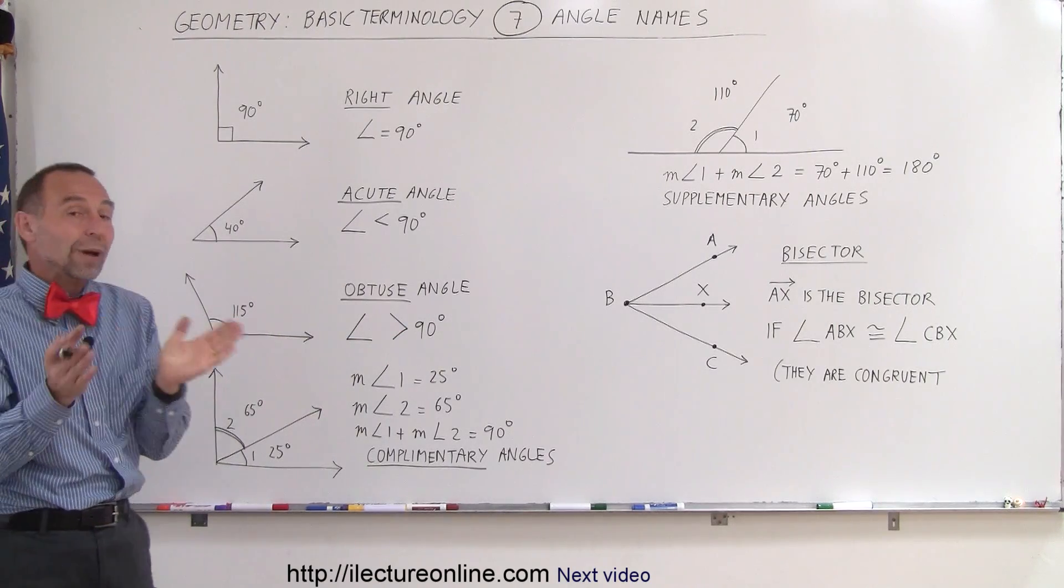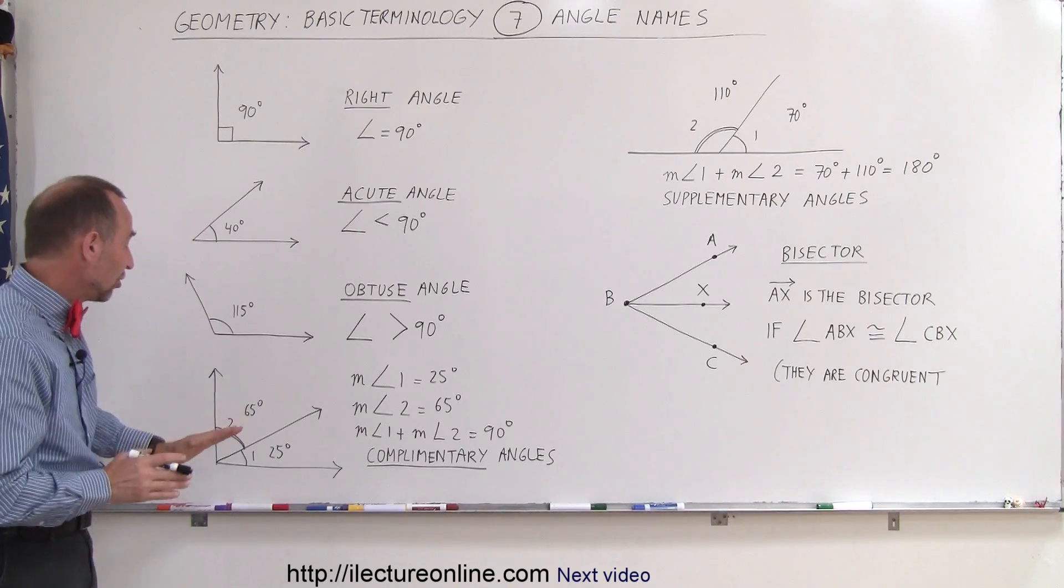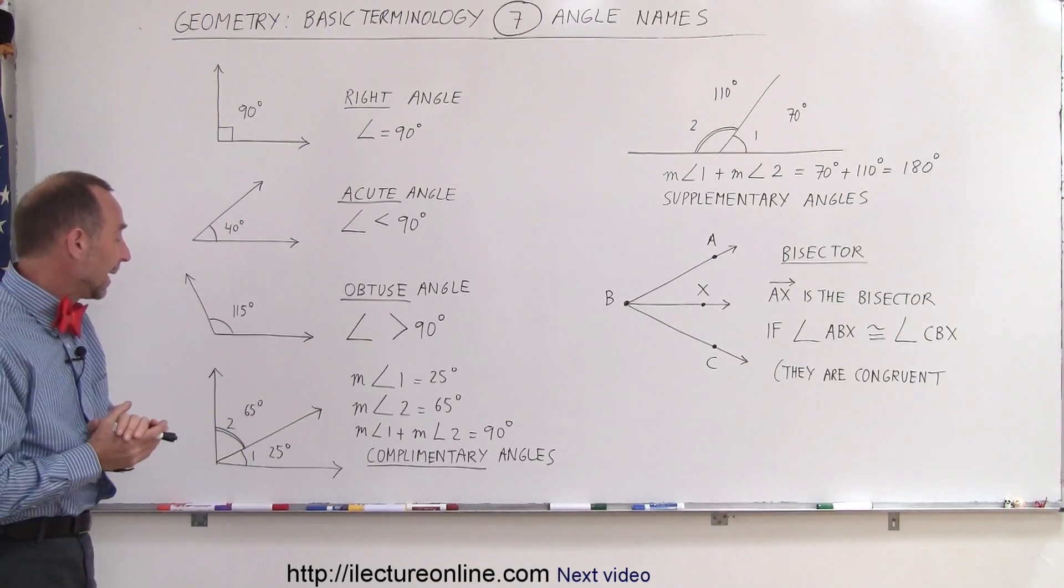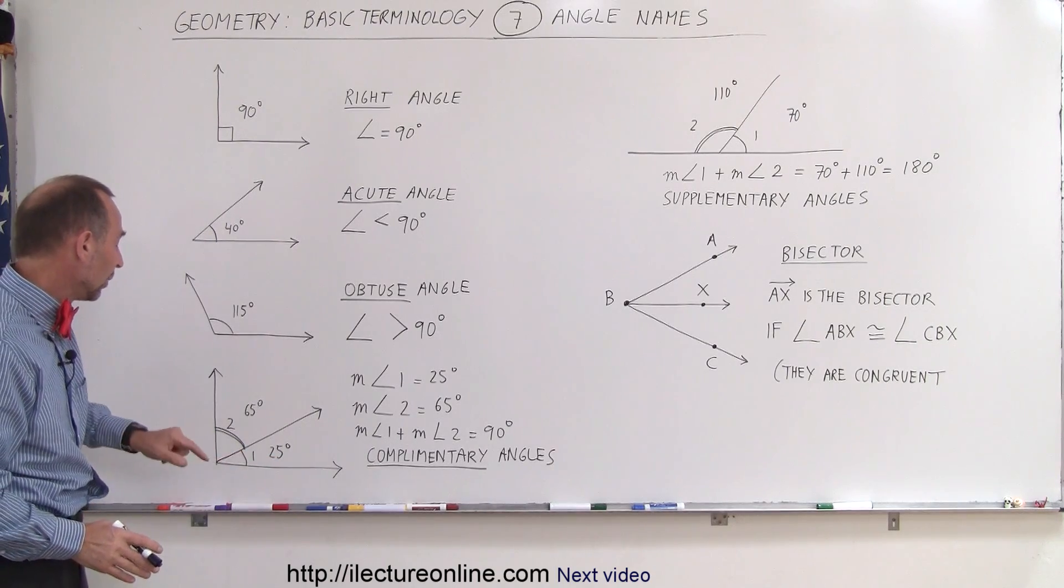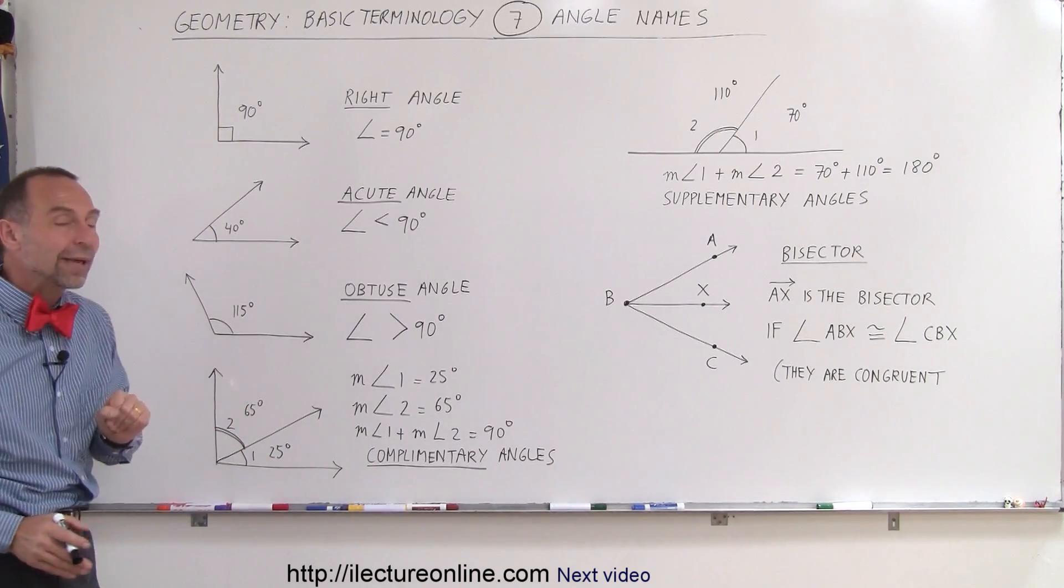Now, what if we have two angles that are side by side, in other words, they share a common ray, and they both add up to 90 degrees. So we have a 25 degree angle called angle 1. Angle 2 is a 65 degree angle.